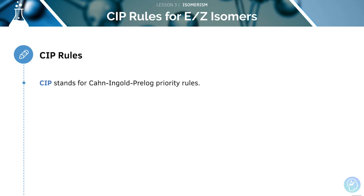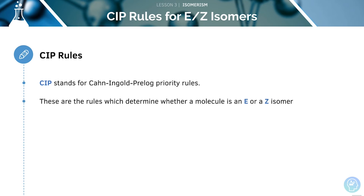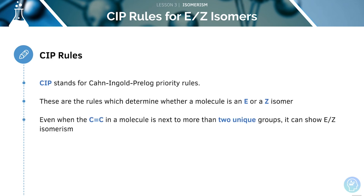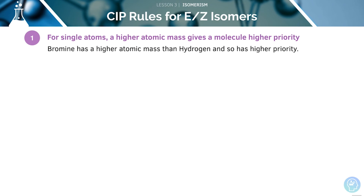Now let's look at the CIP rules. These are the rules which determine whether a molecule is an E or a Z isomer. Even when the carbon-carbon double bond in a molecule is next to more than two unique groups, it can show EZ isomerism. There are some key rules to remember to work out if a molecule is an E isomer or a Z isomer.